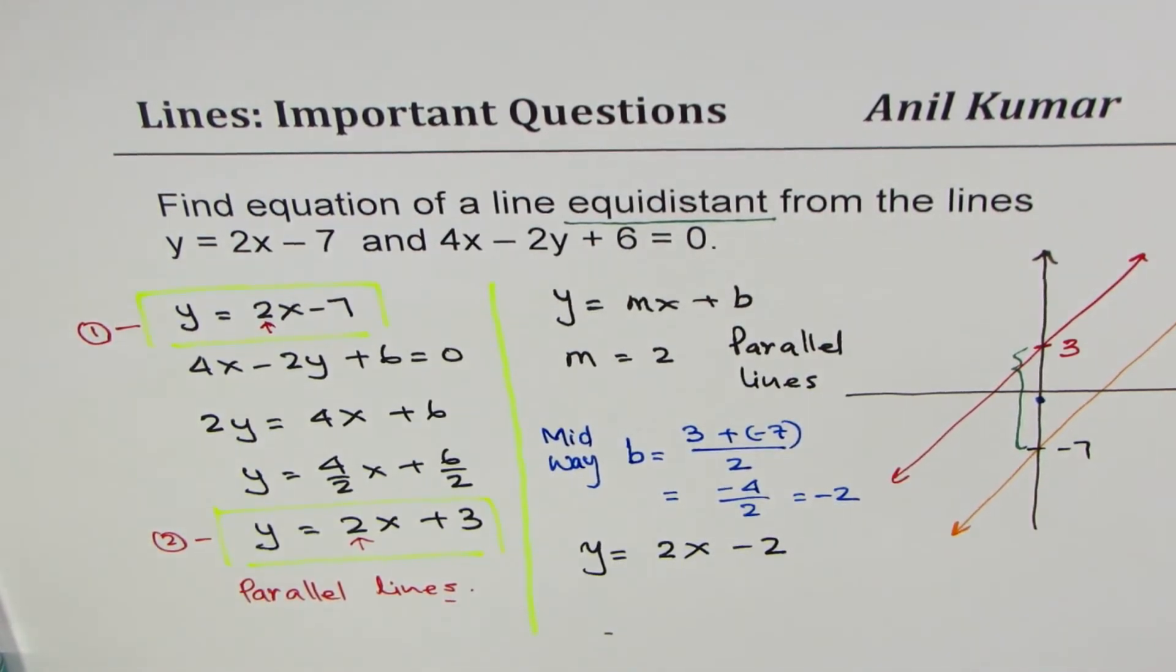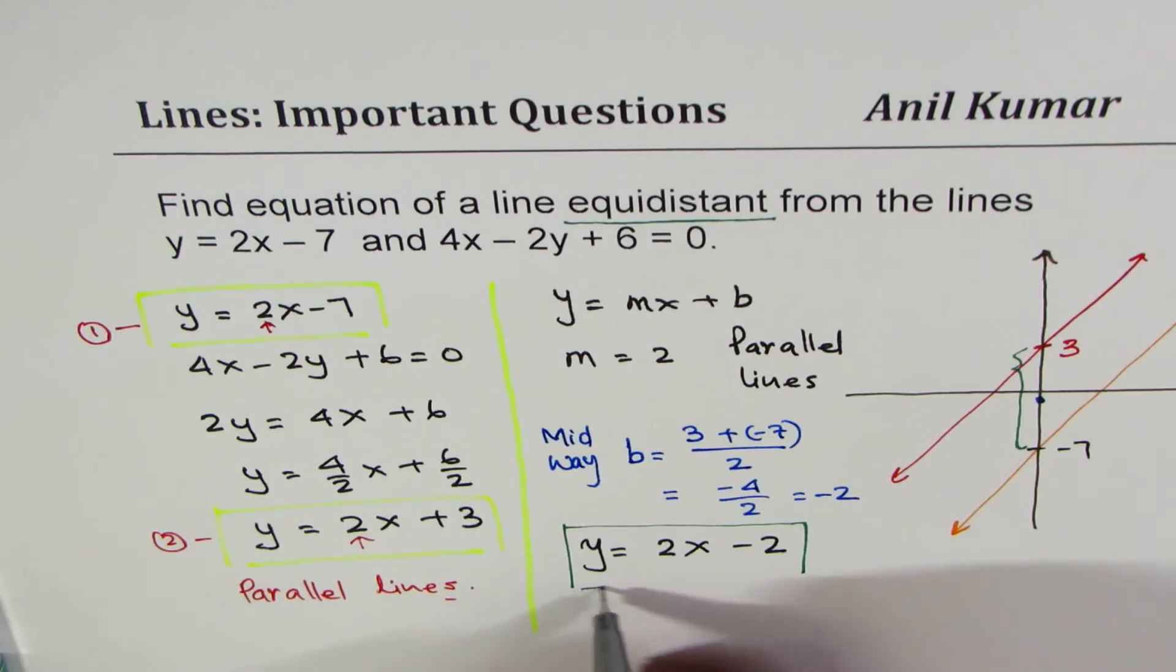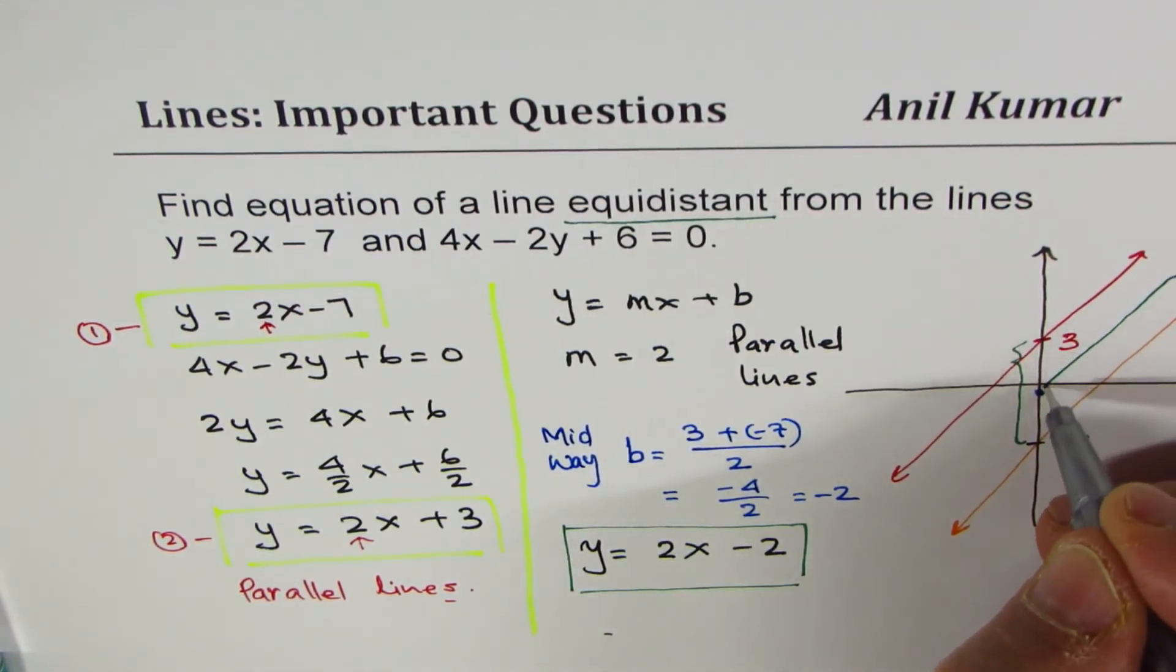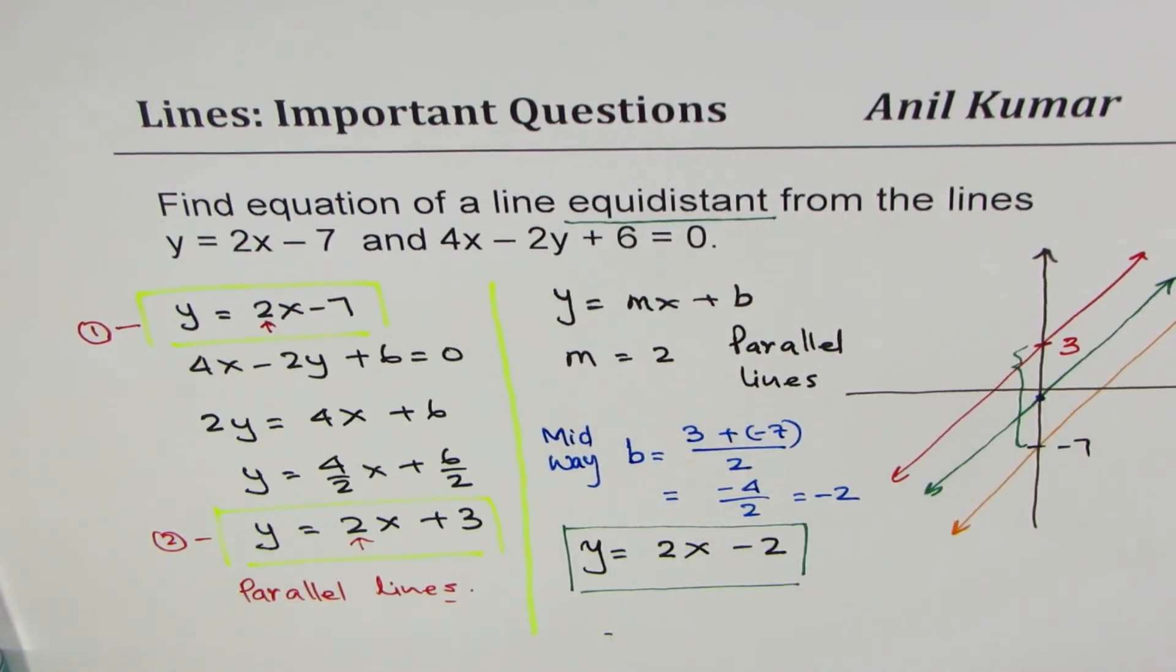So this line becomes a line which is equidistant from both these lines. Do you see that? So that is how, without using any distance formula, we can easily find or solve such a question.